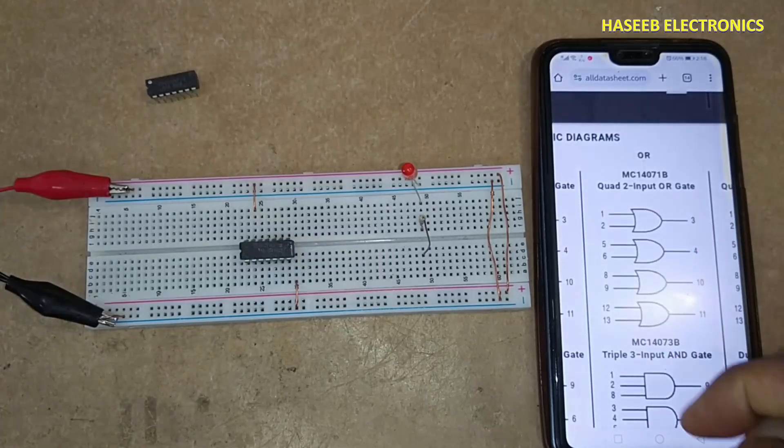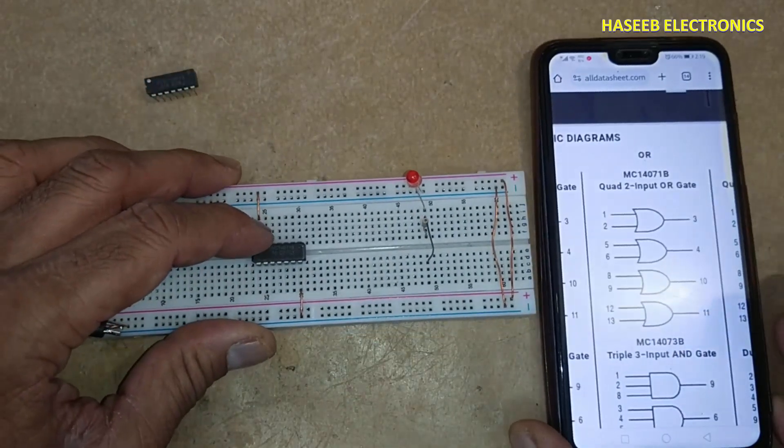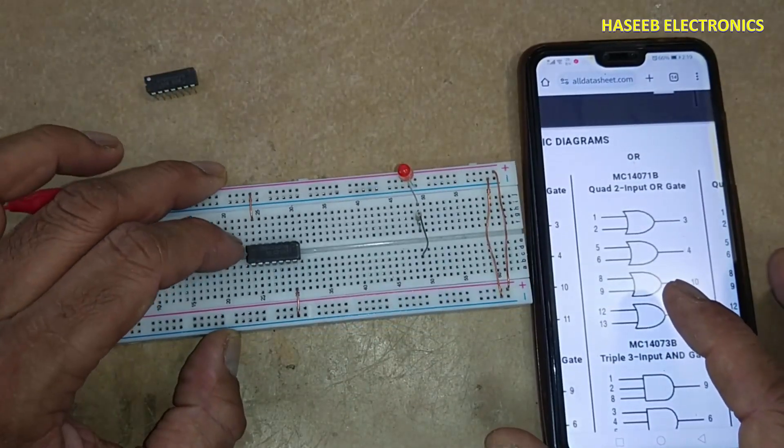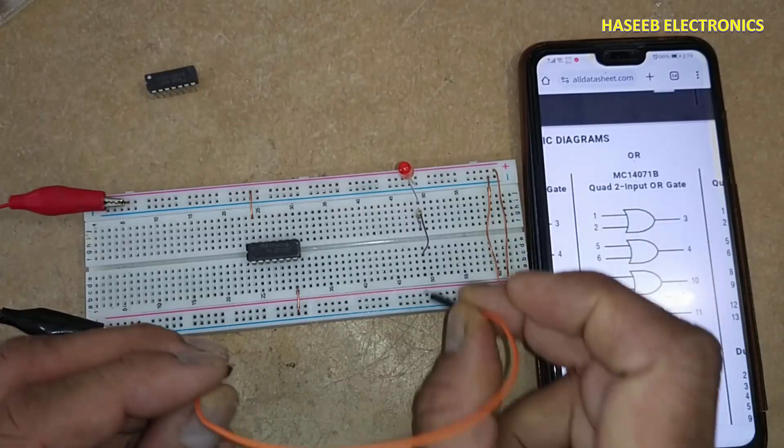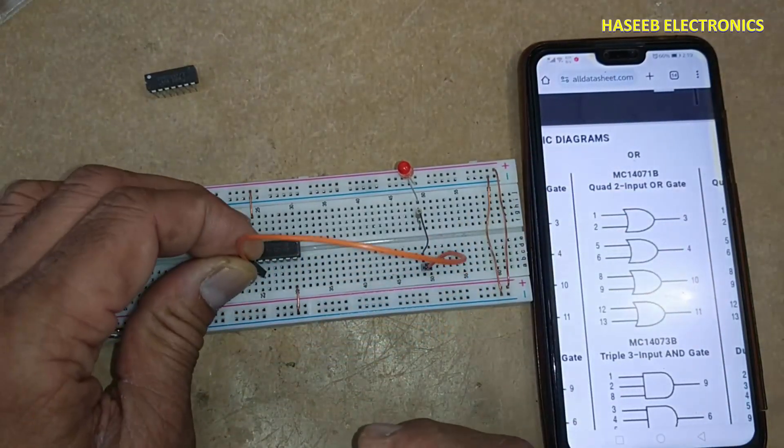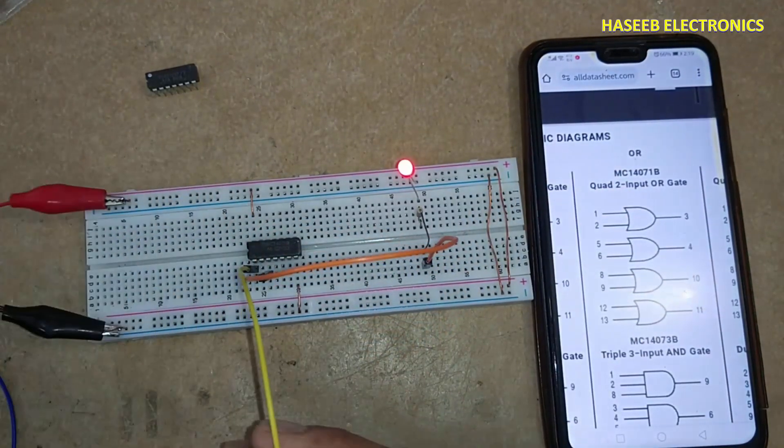Two input OR gate. Pin number 7 ground, pin 14 VDD. First gate output from pin number 3, pin 1 and pin 2 input.